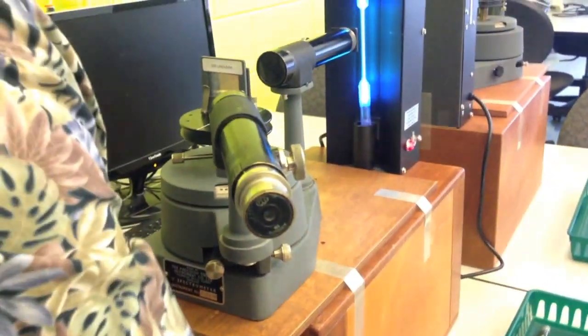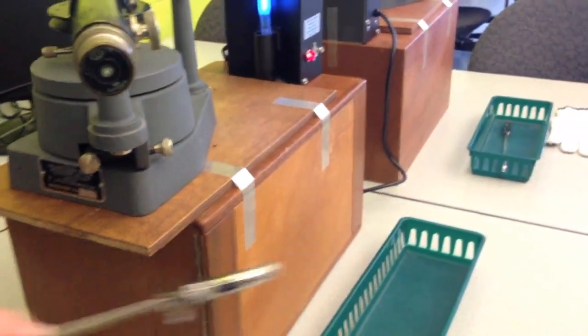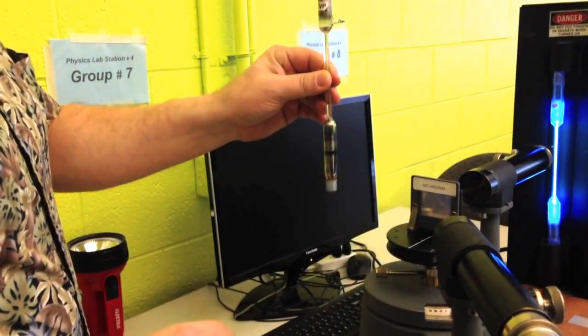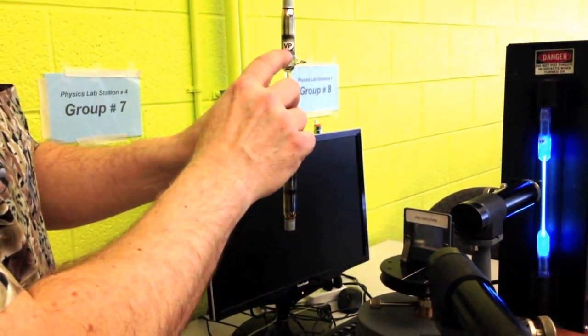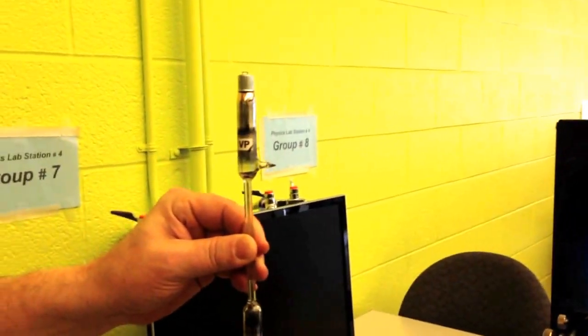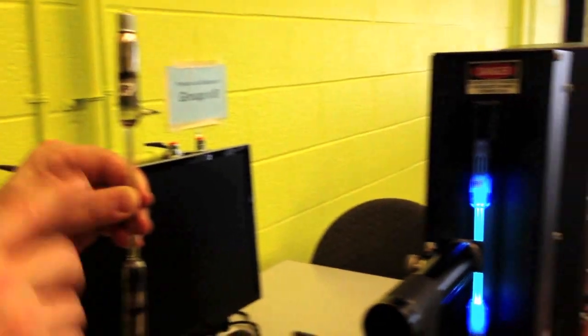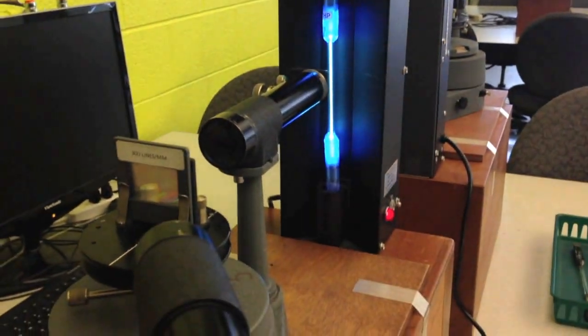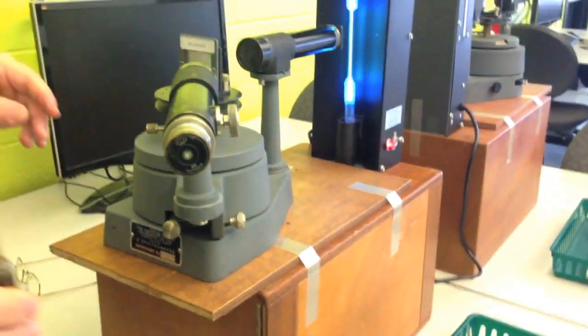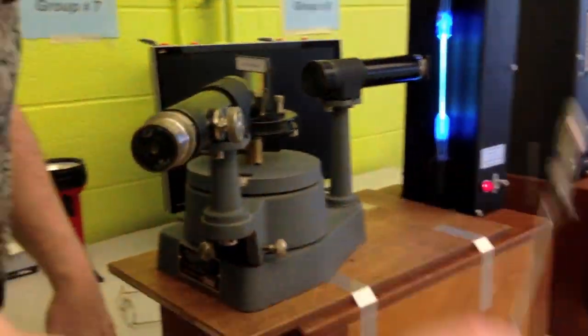And without going into further details, our goal is to identify the gases in these two discharge tubes. They are coded with a two-letter code, which has to be included with your lab report on your table. And if you do all the measurements correctly, then you will be able to identify the gas that's in these discharge tubes.